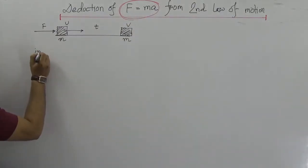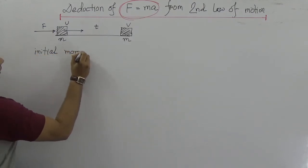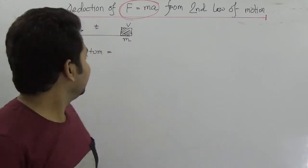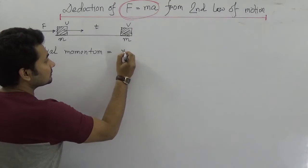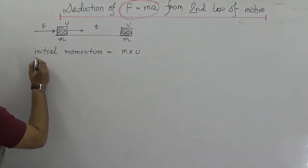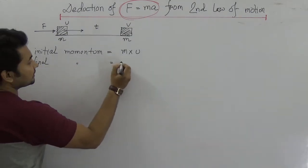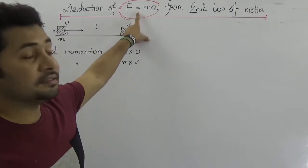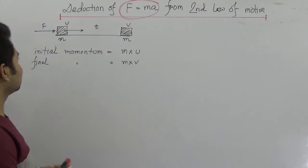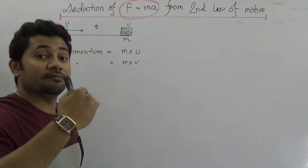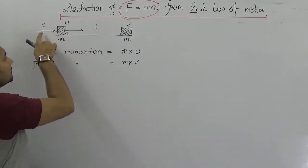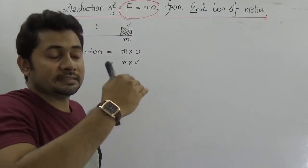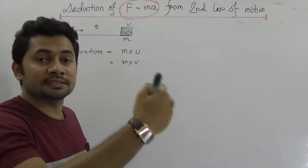If I say that the initial momentum — and I hope you know that momentum is the product of mass and velocity — then as it is the initial, it will be mass times initial velocity U. And if I say the final momentum, then it must be mass times V. A constant force is applied throughout the time T, so the change of velocity depends on the time and force applied.